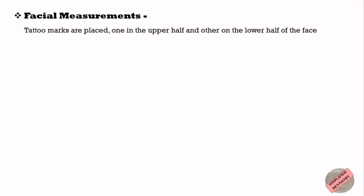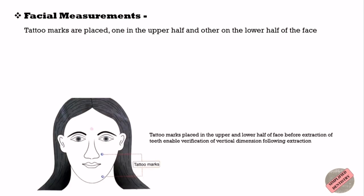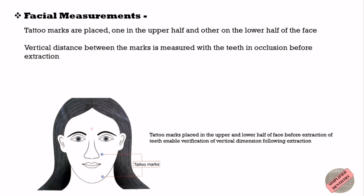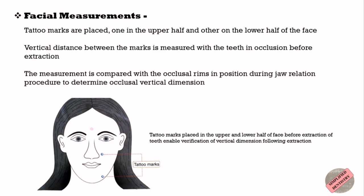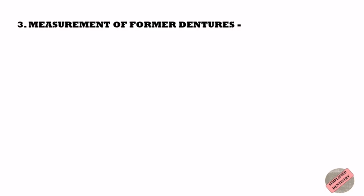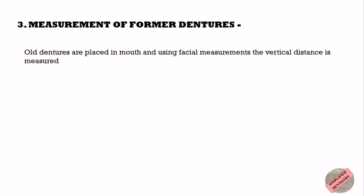For facial measurements, tattoo marks are placed — one in the upper half and one on the lower half of the face. The vertical distance between the marks is measured with the teeth in occlusion before extraction, then the measurement is compared with the occlusal rims in position during the jaw relation procedure. The third mechanical method is measurement of former dentures: the old dentures are placed in the mouth and using facial measurements the vertical distance is measured. This can only be used as a guide, as there could be loss of vertical dimension with old dentures due to ridge resorption and wear of the artificial teeth.